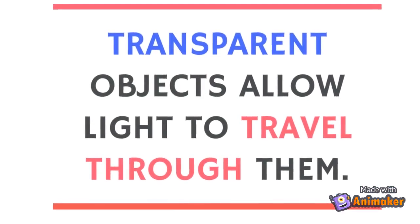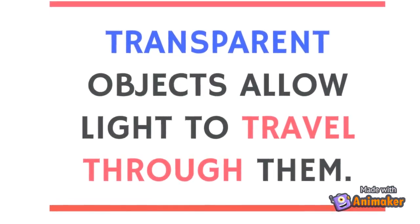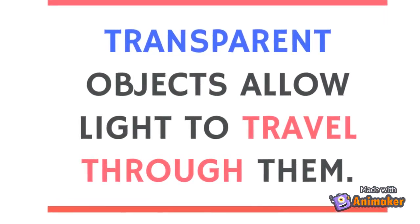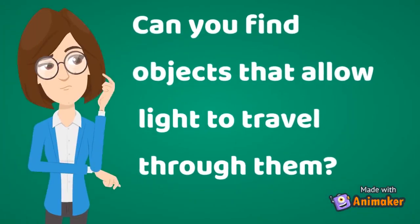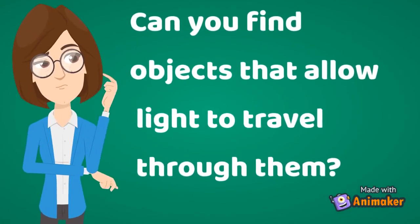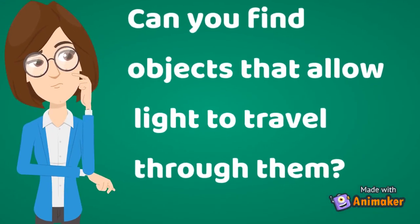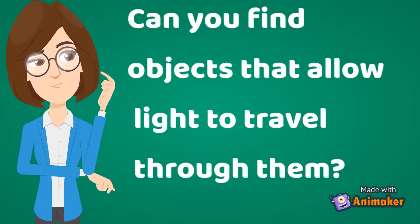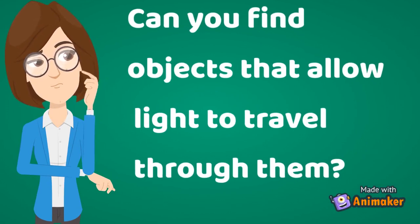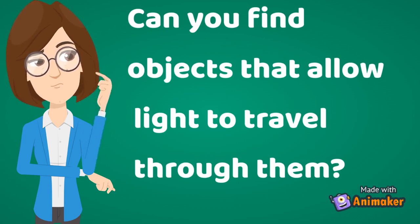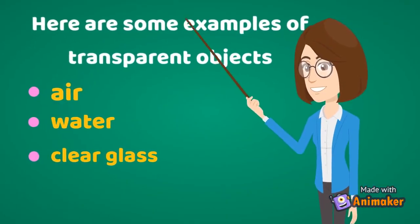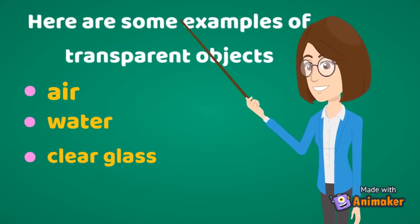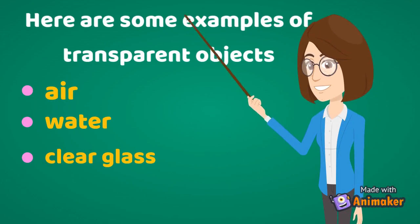Transparent objects allow light to travel through them. Look around your house — can you find objects that allow light to travel through them? Here are some examples of transparent objects: air, water, and clear glass.